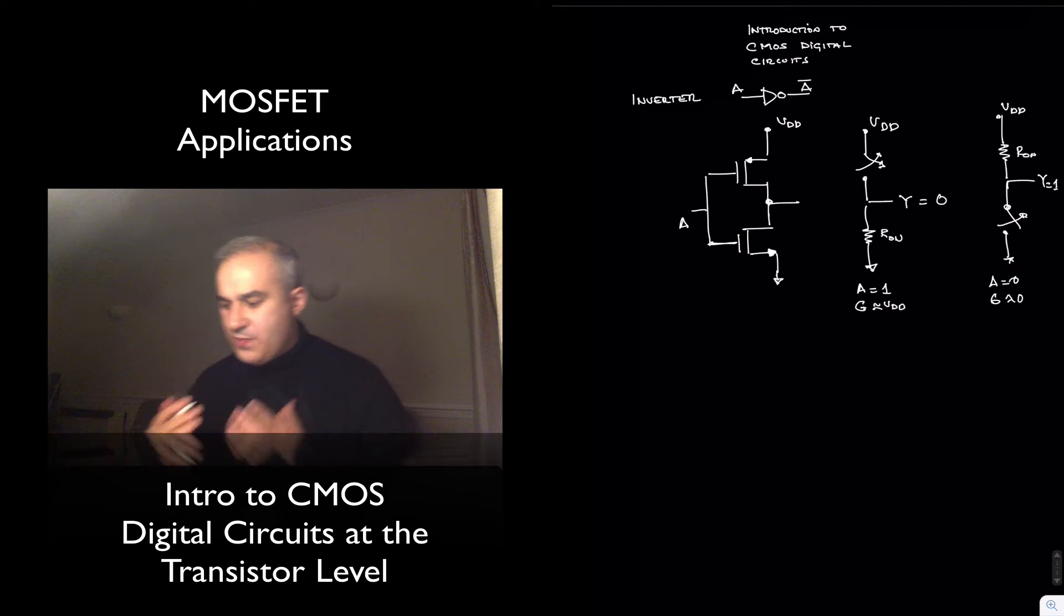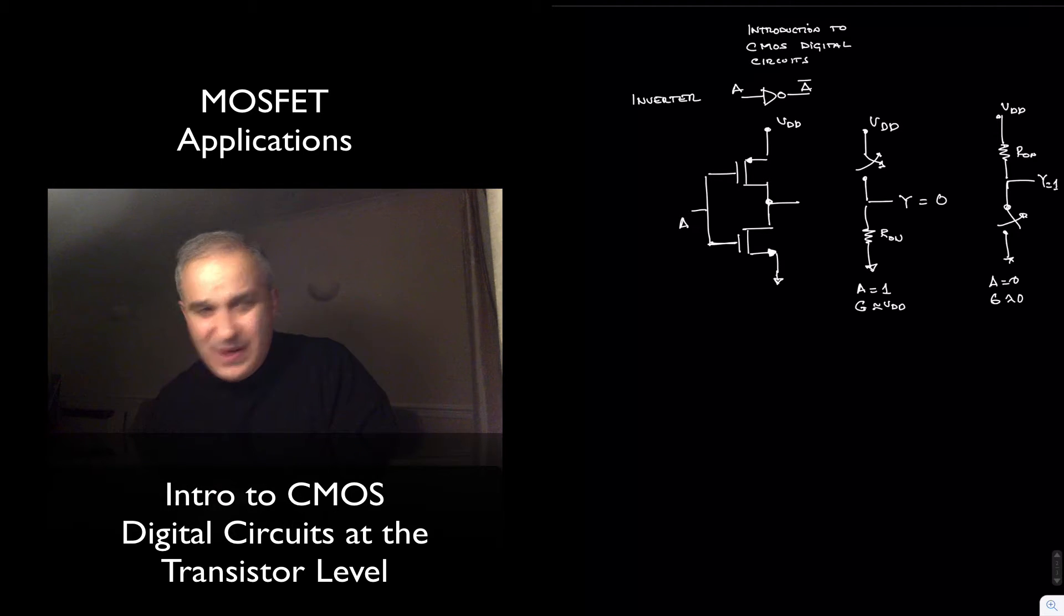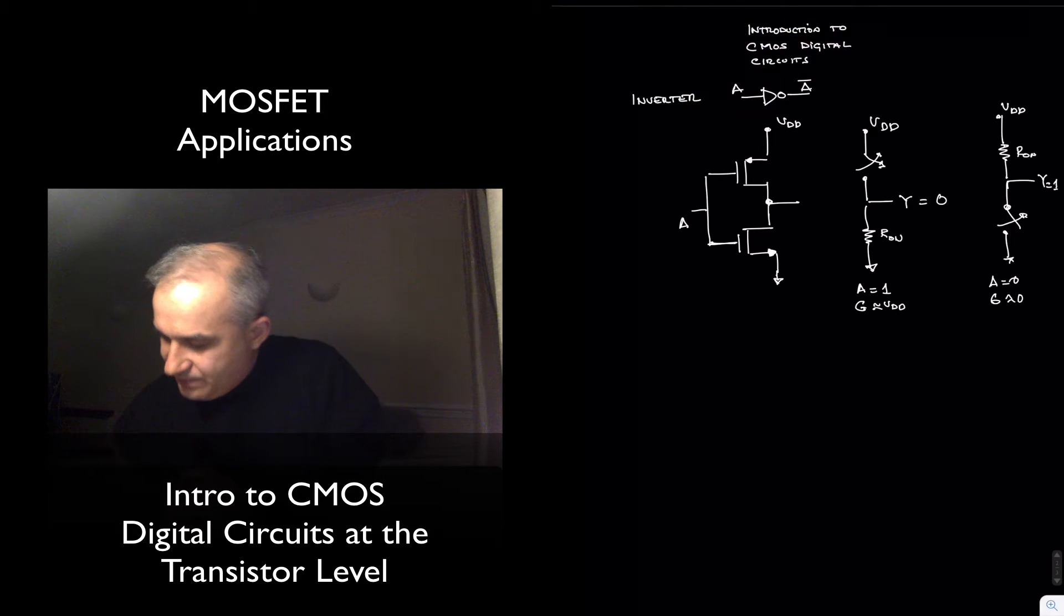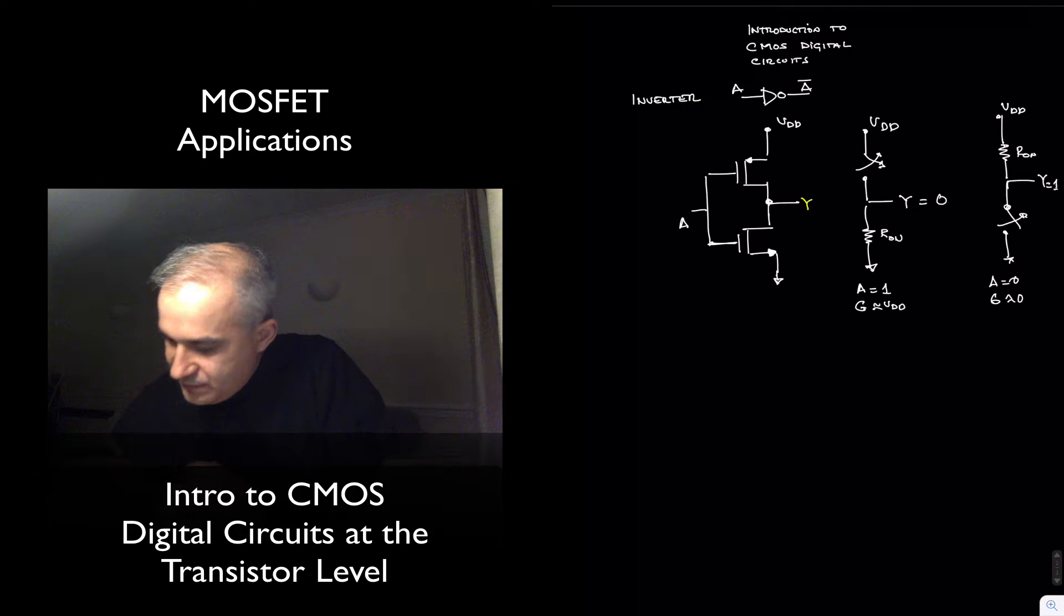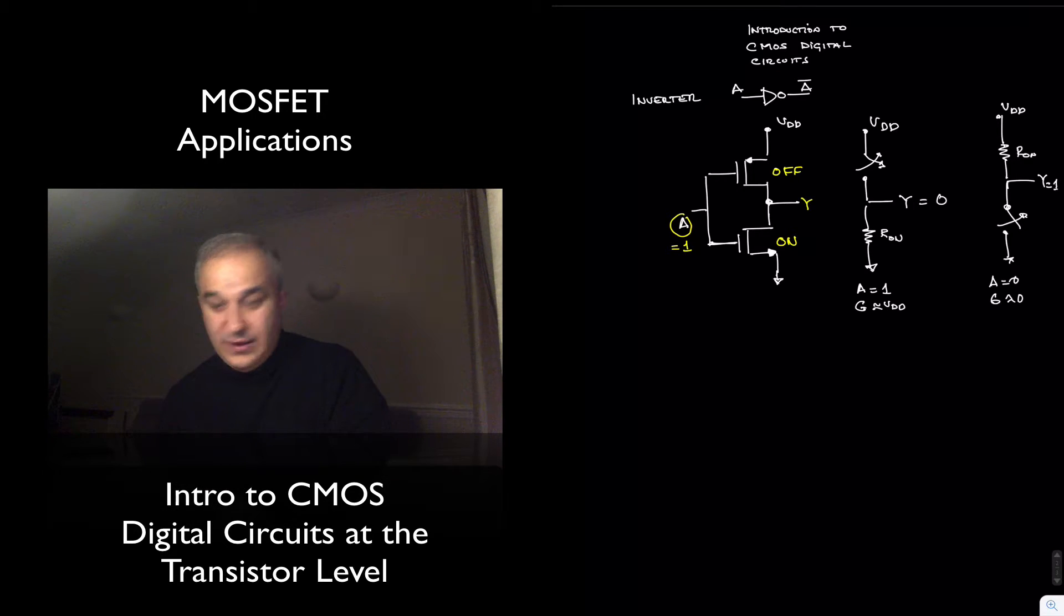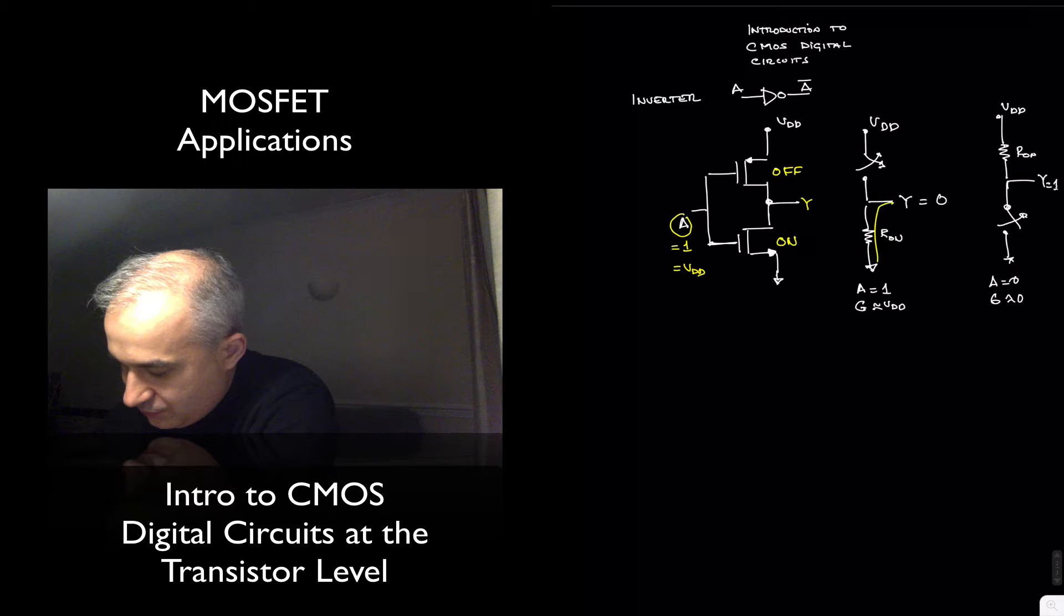So this is complementary. Let's review this circuit again, quickly. If this is Y, if A is high, this transistor is ON, and this is OFF, for A equals LOGIC 1, or a voltage level VDD, close to VDD. So there is a path to ground, and you get zero volts.